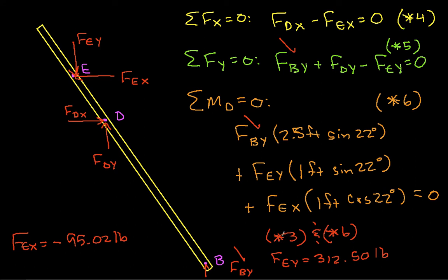And then FEX is minus 95.02 pounds. So by combining star 3 and star 6, I can get FEY and FEX. Once I know FEX, then I can use star 4 to get FDX. Once I know FEY, I can use star 5 to get FDY.